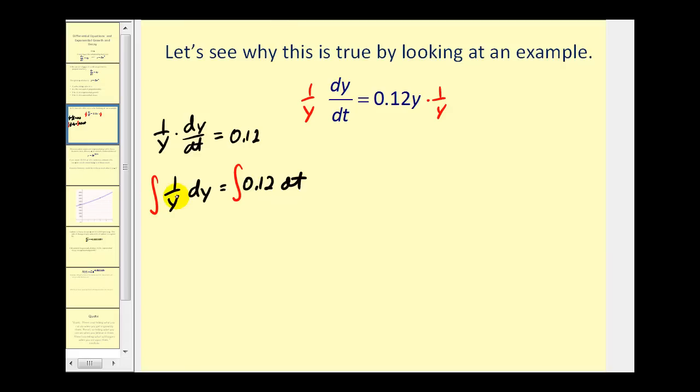The anti-derivative of one over y with respect to y would be natural log y equals the anti-derivative of 0.12 with respect to t would be 0.12t and then plus c.